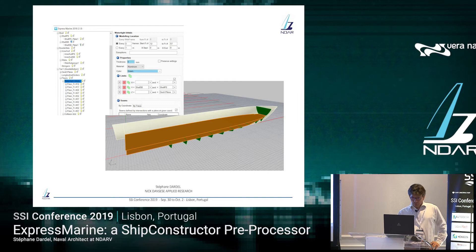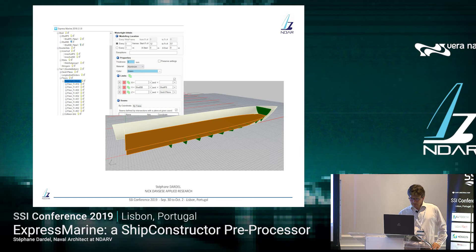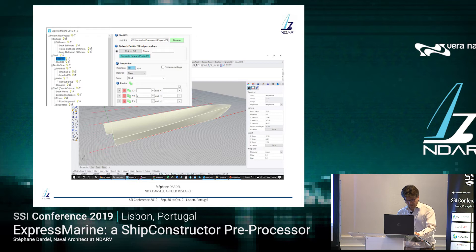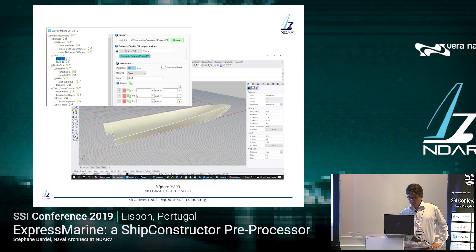Then I will create a deck. You may notice that this hierarchy is prepared by Express Marine — you don't need to go and define it; it's suggested and prepared by the software. I'll create a deck set at an altitude of 3.4 meters, thickness five, aluminum. I will set it longitudinally going from X equals zero to X equals frame 61. Transversally, it will be bound by the shell starboard to the shell port side, because those shell platings are now in the parametric model, so I can use them as intersections.